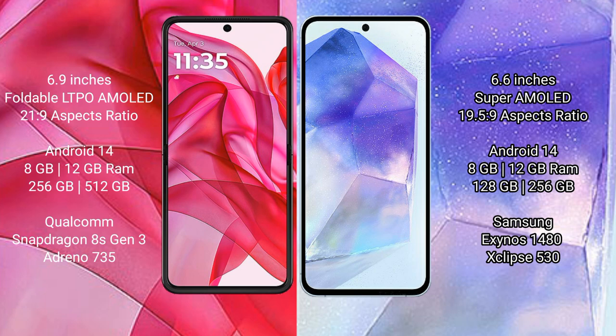Both the Motorola Razr 50 Ultra and Samsung Galaxy A55 run on Android 14. The Razr 50 Ultra comes with 8GB or 12GB RAM, 256GB or 512GB internal storage, and a Qualcomm Snapdragon 8s Gen 3 processor with Adreno 735 GPU. The Galaxy A55 comes with 6GB or 8GB RAM, 128GB or 256GB internal storage, a Samsung Exynos 1480 processor, and Xclipse 530 GPU.